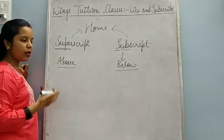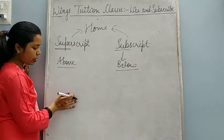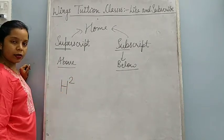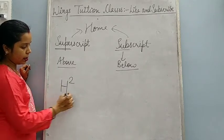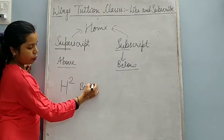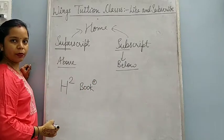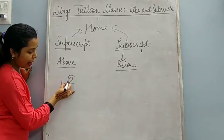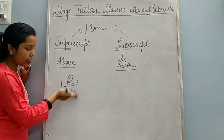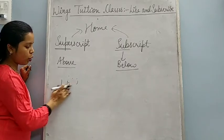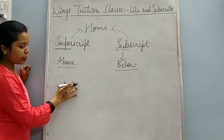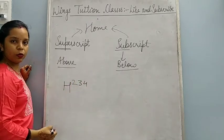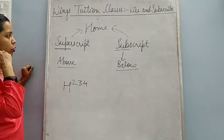What is Superscript? Sometimes you might have seen text written like a square — some text written on the top. Superscript makes your text smaller than the normal text and places it above the normal line. This is your normal line, and when you apply Superscript, it will make the text small and write it upside — like this. If you want to write like this, you use Superscript.